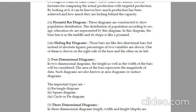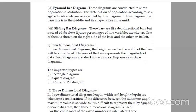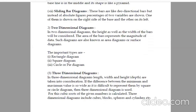Second is two-dimensional diagrams. In two-dimensional diagrams, the height as well as the width of the bars will be considered. Length and height and width both are considered. The area of the bars represents the magnitude of the data. Such diagrams are also known as area diagrams or surface diagrams. If you're taking two dimensions, then it will be your area. The important types are rectangle diagram, square diagram, circle or pi diagram. In rectangle, we will see length and width, so it is two-dimensional. Square diagram also because length and width are considered. Circle also because there is an angle and a radius.